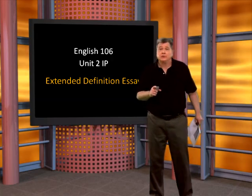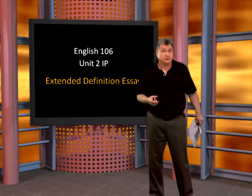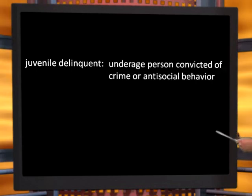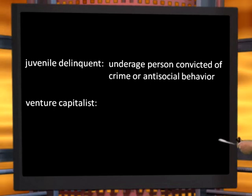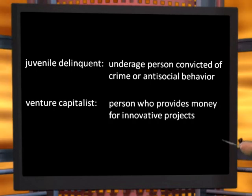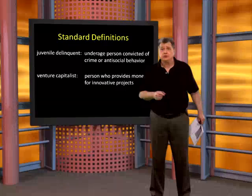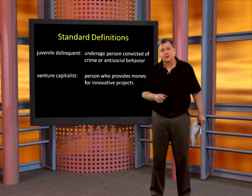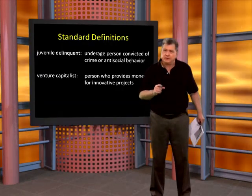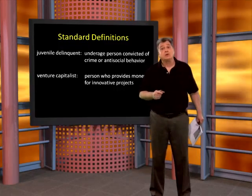Usually when you hear the word definition, you think of a dictionary or encyclopedia used to define terms. A juvenile delinquent is an underage person convicted of crime or antisocial behavior. A venture capitalist is a person who provides money for innovative projects. Those are called standard definitions, and you should definitely know them and put them at the top of your essay whenever you write on one of these assigned terms.